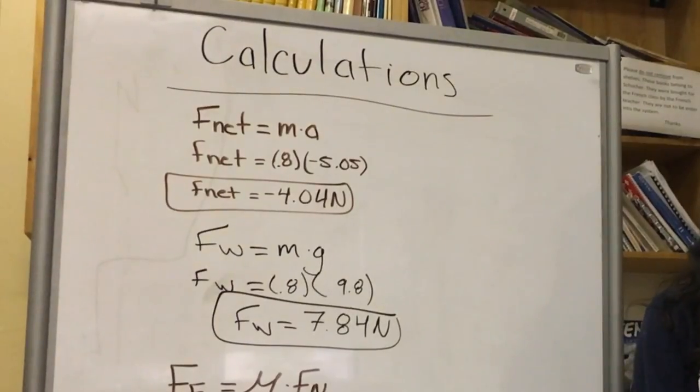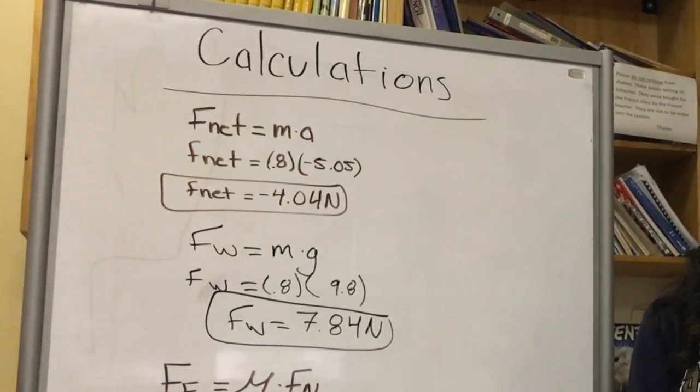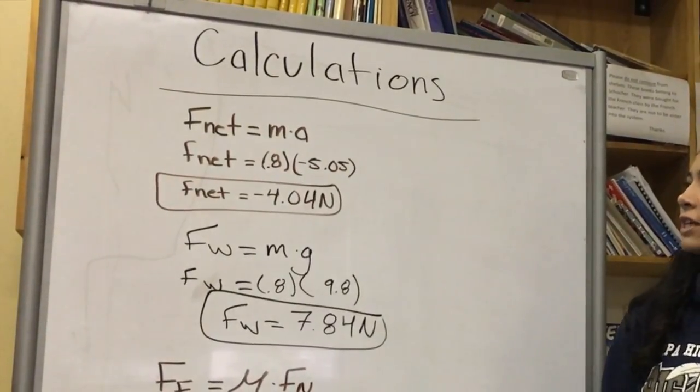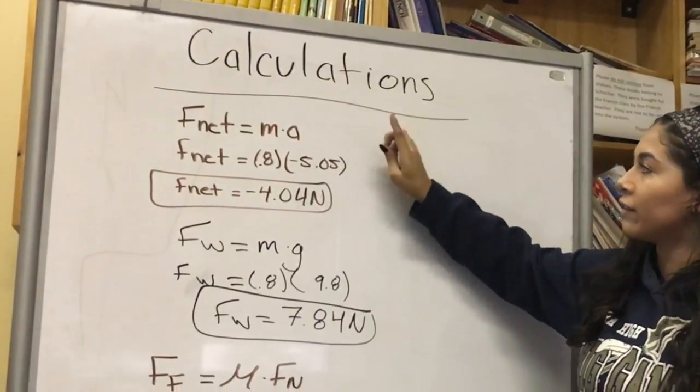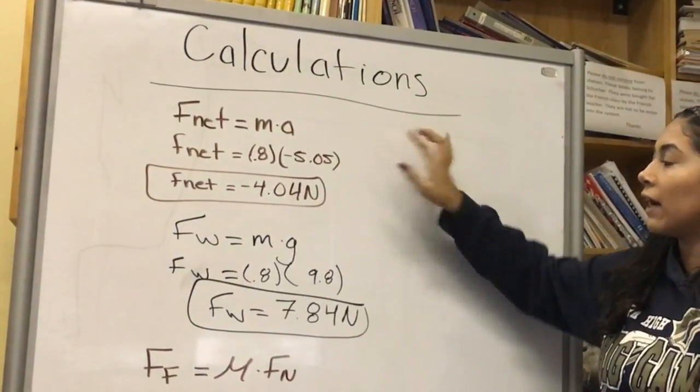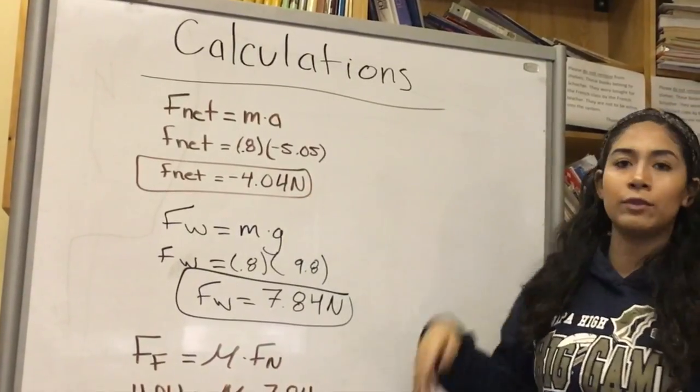Once I solved for the initial velocity and acceleration, I can calculate the f net using f net equation mass times acceleration. I plugged in for mass 0.8 and for acceleration negative 5.05 and got negative 4.04 newtons once I multiplied them together.